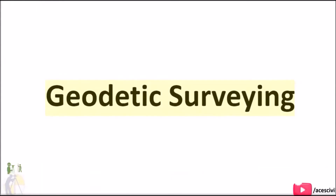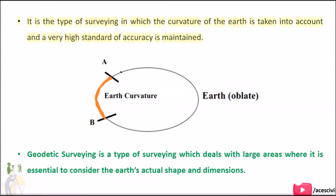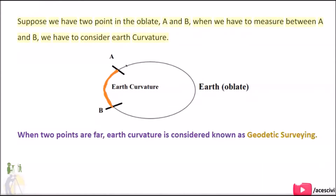Geodetic surveying is the type of surveying in which the curvature of the Earth is taken into account and a very high standard of accuracy is maintained. It deals with large areas where it is essential to consider the Earth's actual shape and dimensions. Suppose we have two points A and B on the oblate spheroid; when we measure between A and B, we have to consider the Earth's curvature. When two points are far apart, Earth's curvature is considered — this is known as geodetic surveying.